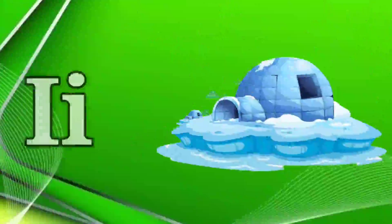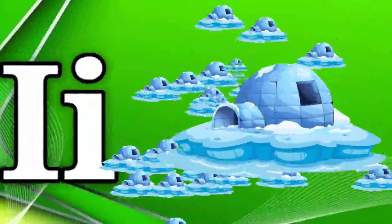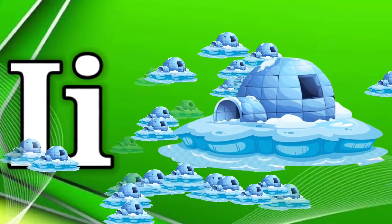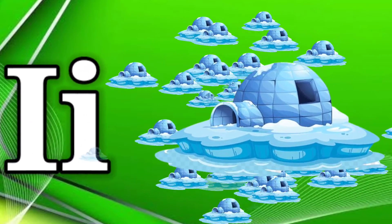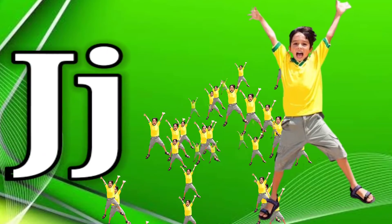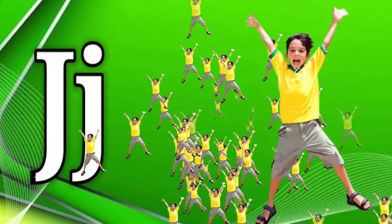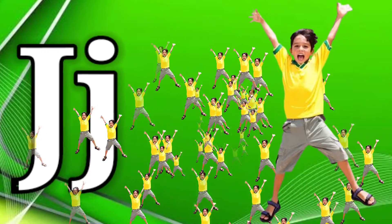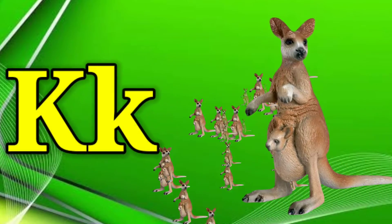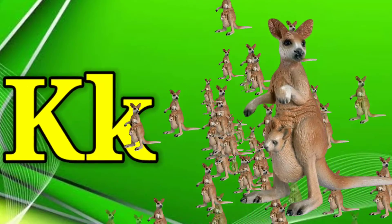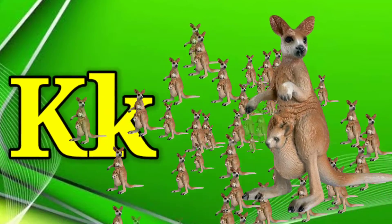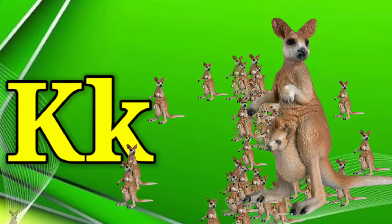I is for igloo, i-i-igloo. J is for jump, j-j-jump. K is for kangaroo, k-k-kangaroo. L is for lion, l-l-lion.